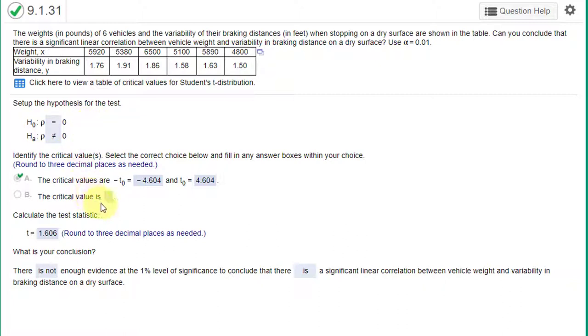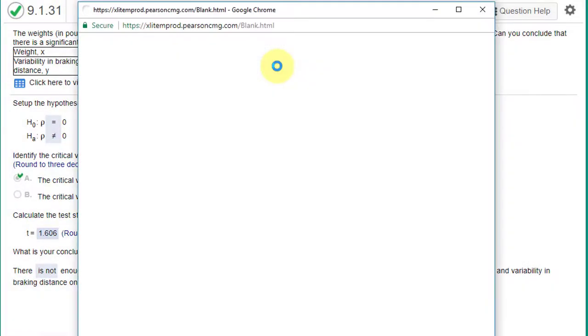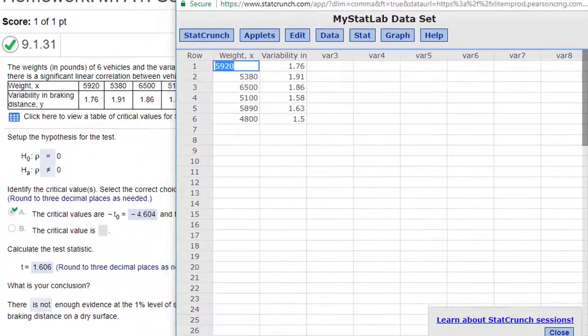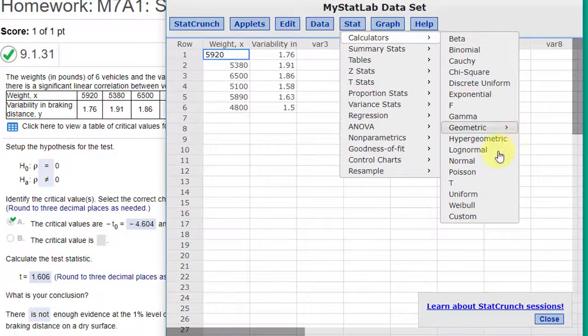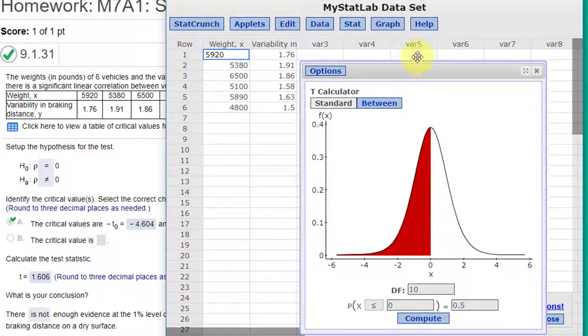We first need to get the critical values of t, and because it's a two-tail test we'll have two values. To find it, let's use StatCrunch. I'm going to open up this data in StatCrunch so we'll have that to use in a minute, but we start with Stat, Calculators, T to get our critical values.